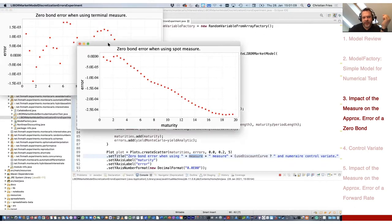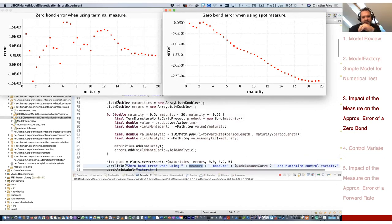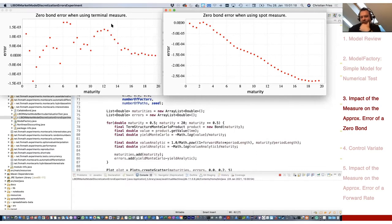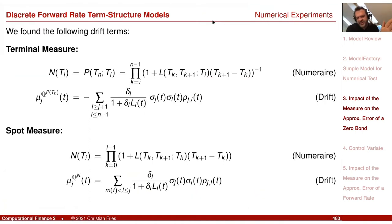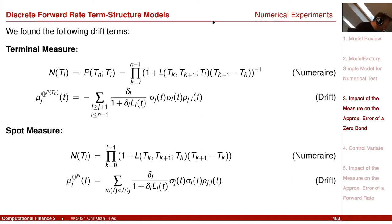Rather than comparing prices directly, I take minus the logarithm divided by the maturity — this gives an implied interest rate r, since P ≈ e^{-r·T}. I compute this for both the Monte Carlo value and the analytic value, and the error is the difference in r. Let's run this program — I should get two different plots — and check the error of the zero-coupon bond as a function of the measure.